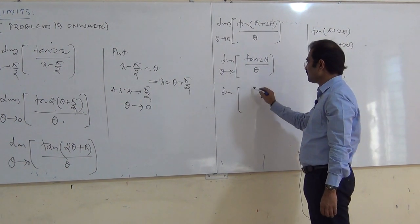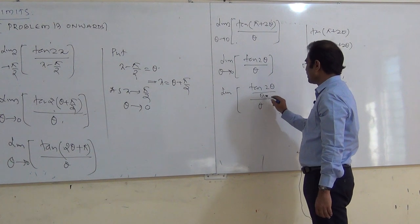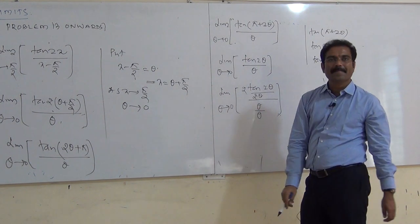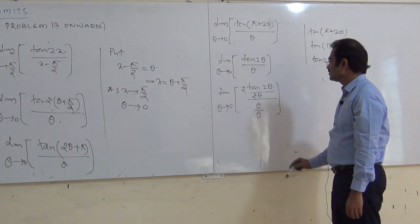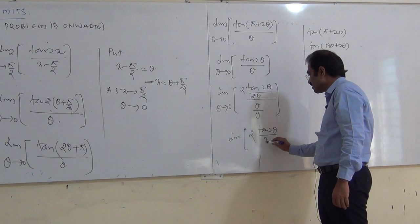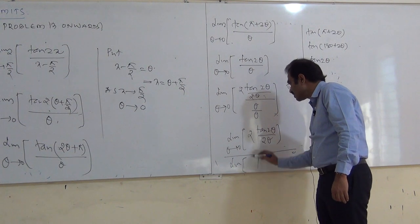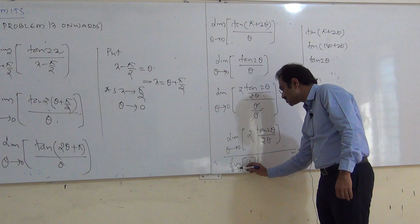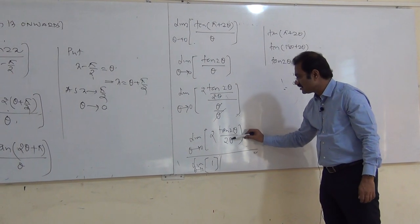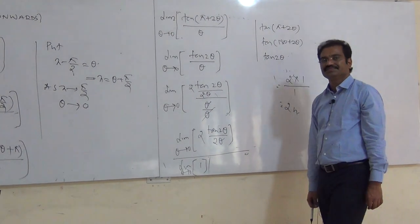Now divide numerator and denominator by θ, and multiply and divide by 2: limit of 2 · tan(2θ)/(2θ) as θ tends to 0, divided by limit of 1 as θ tends to 0. This is of the form tan θ/θ as θ tends to 0, which equals 1. So 2 × 1 / 1 = 2. The answer is 2.